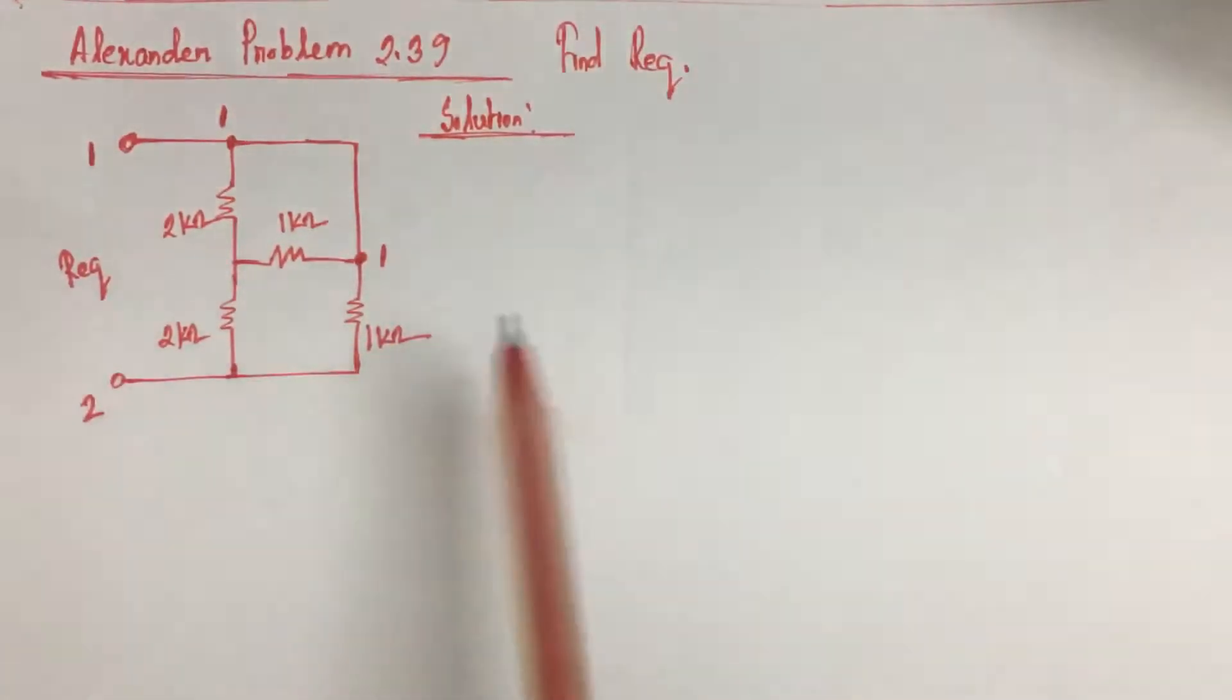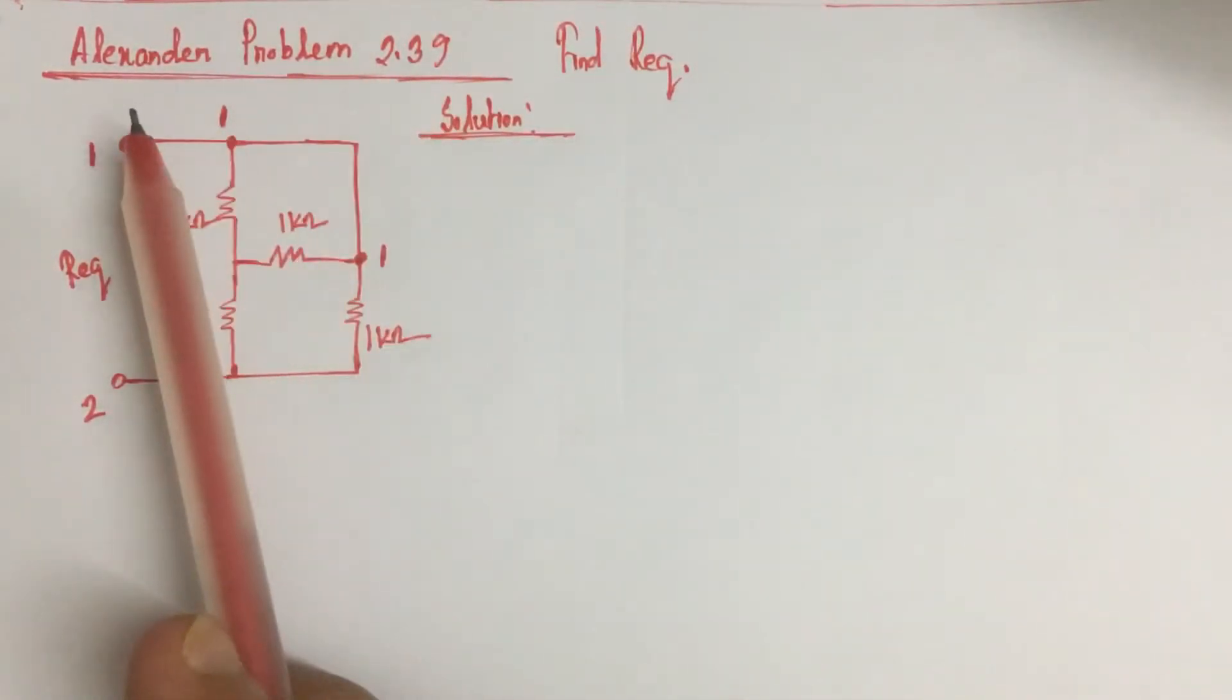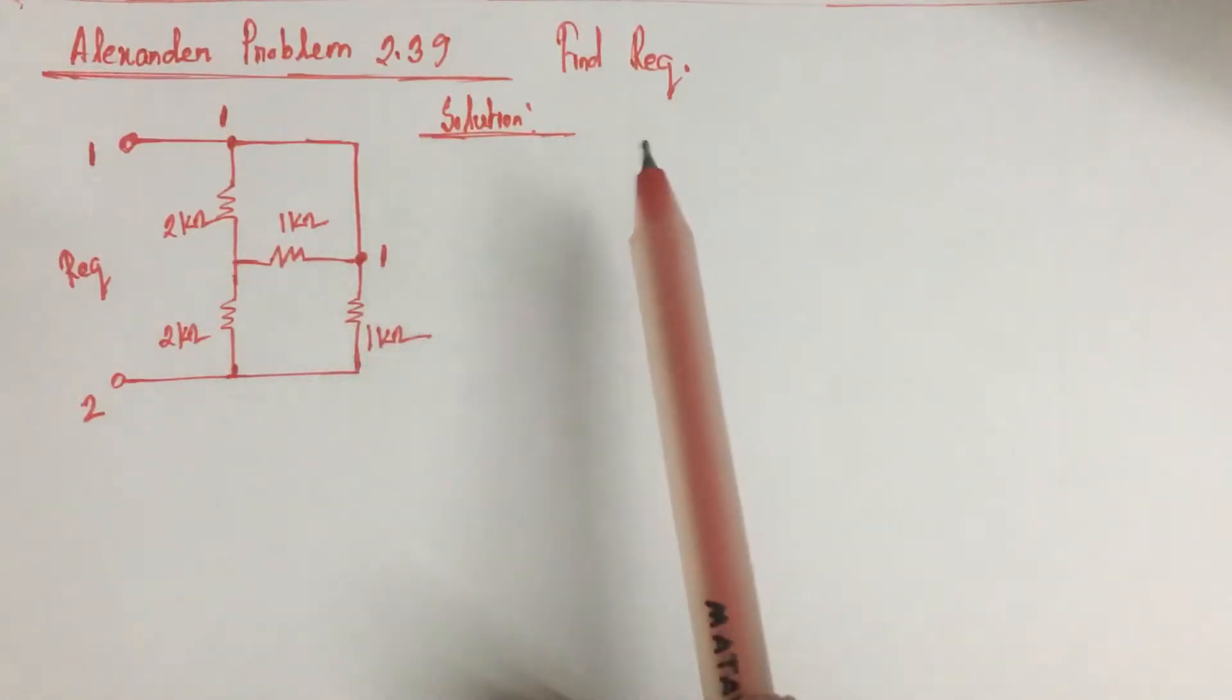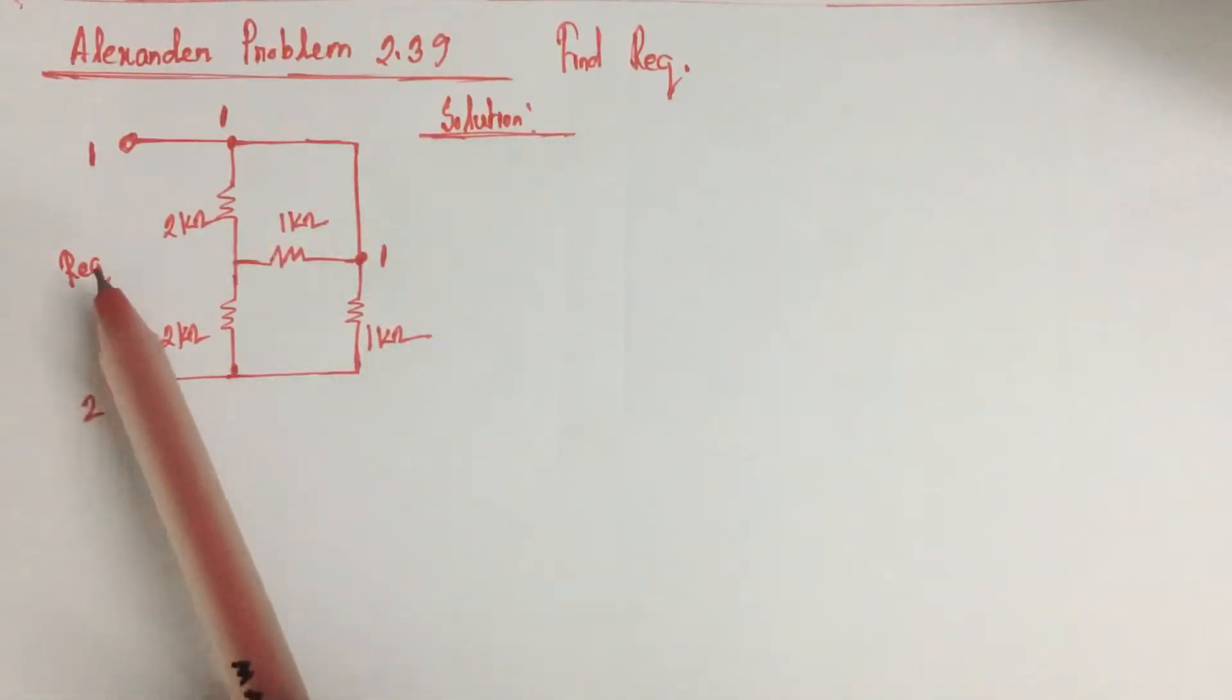Hi viewers, today we will solve problem 2.39 from Alexander. Here we have to identify the equivalent resistance between point 1 and point 2.